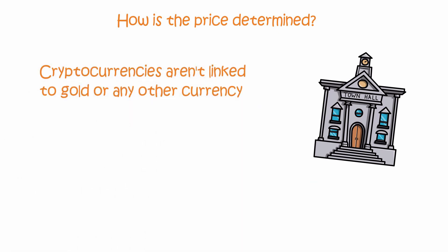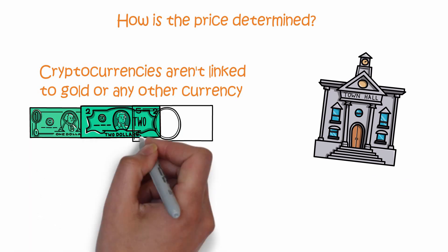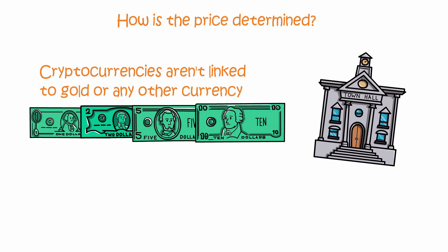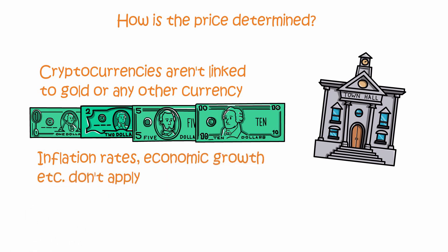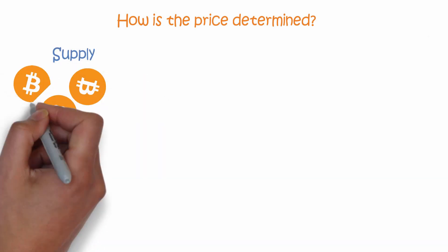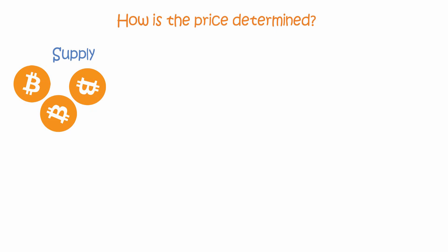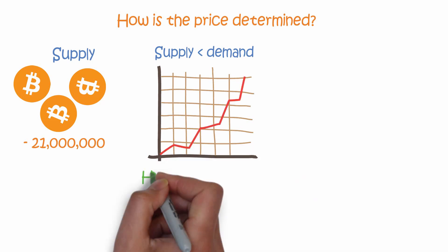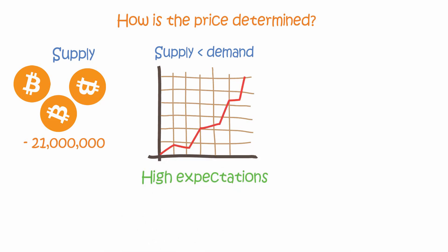This doesn't really matter, since you can't do that with dollars or any other currency either anymore. But things like inflation rates, economic growth, and so on don't apply to bitcoin like they affect physical currencies. The price of cryptocurrencies comes from the supply and demand on the market. The supply changes all the time since more currencies are generated all the time — bitcoin is mined at a fixed rate until it reaches the maximum of 21 million. When supply is at a lower rate than demand, the price rises. The price is set by the market and reflects expectations: when everyone has high expectations, more people want to buy, demand exceeds supply, and the price rises.